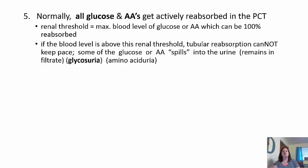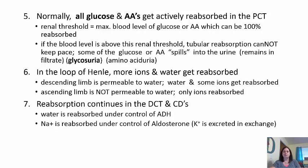In the loop of Henle, more ions and water get reabsorbed. The descending limb is permeable to water, so water and some ions are reabsorbed. The ascending limb is not permeable to water — only ions are reabsorbed there. Reabsorption continues in the distal convoluted tubule and collecting duct, where water is reabsorbed under the control of antidiuretic hormone, and sodium is reabsorbed under control of aldosterone. Since sodium reabsorption causes water to follow, aldosterone also causes potassium to be excreted in exchange for that sodium.